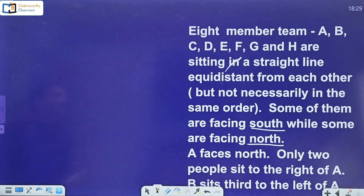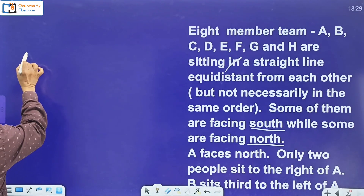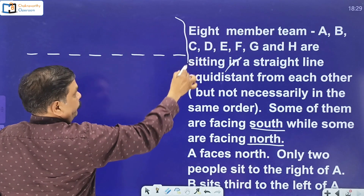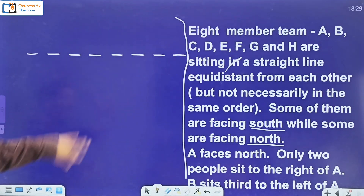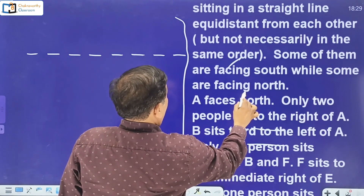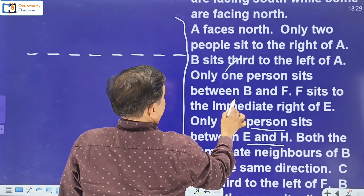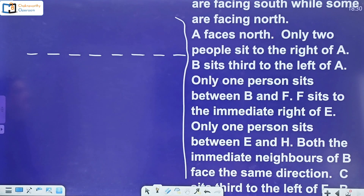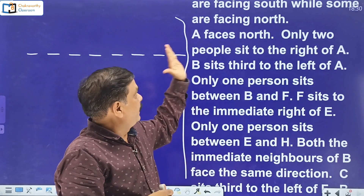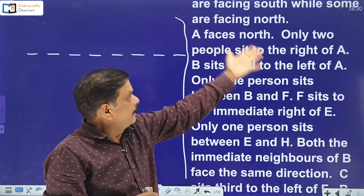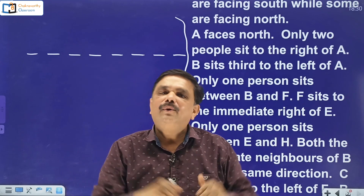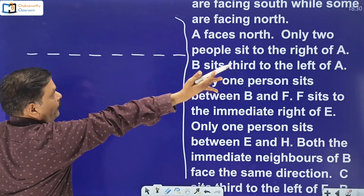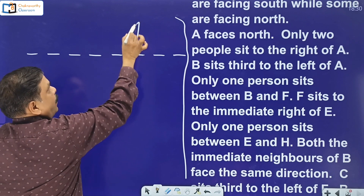Now let me start the question. Total eight persons are there, so take eight dots: one, two, three, four, five, six, seven, eight. Then go one by one. The first key information: A faces north — that is direct information. Then only two people sit to the right side of A — direct information. You can place it directly on the chart. A's place is confirmed at position six, facing north.